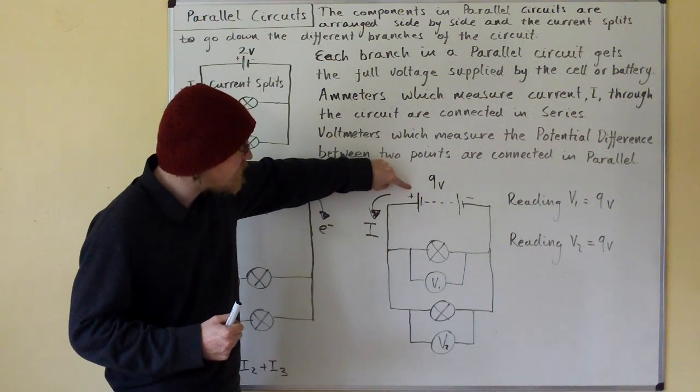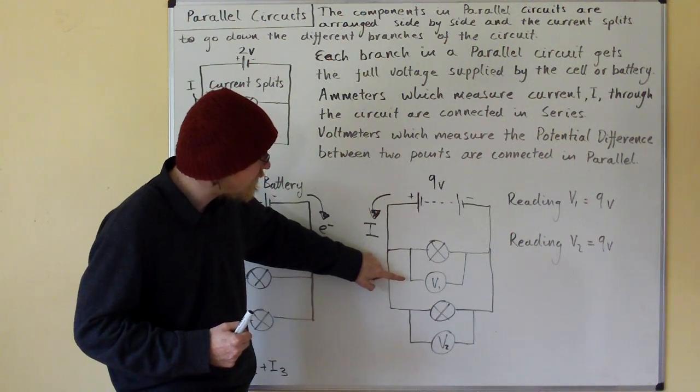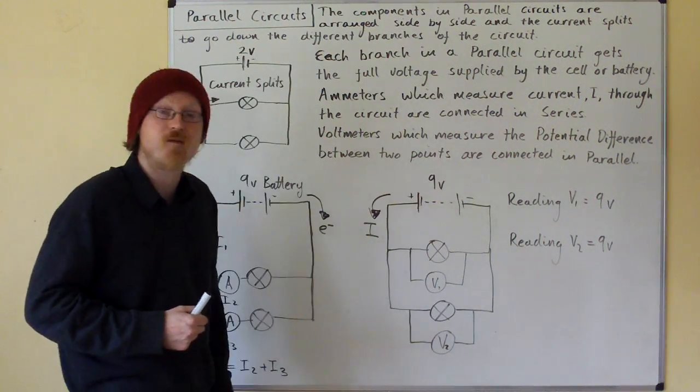We're going from 9 volts positive here to 0 at the negative, so we're getting a potential difference across this branch of 9 volts and across this bulb of 9 volts.